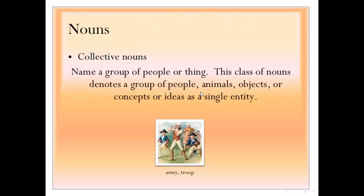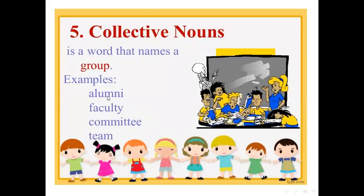Collective noun names a group of people or things. This class of nouns denotes a group of people, animals, objects, or concepts as a single entity. For example, the words faculty, committee, and team each include a lot of people — so we use one word for the whole group. That is called a collective noun.